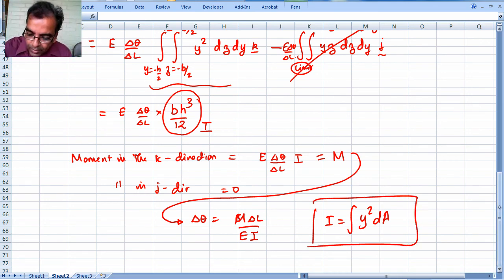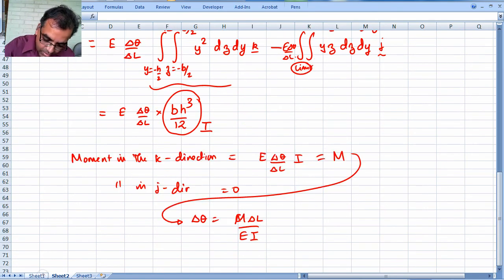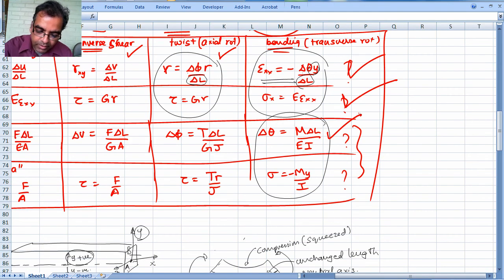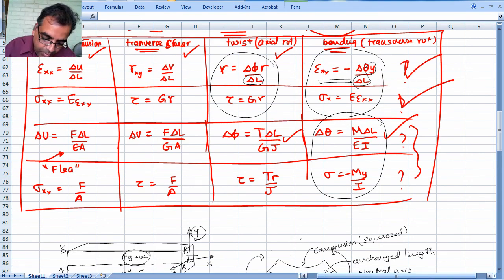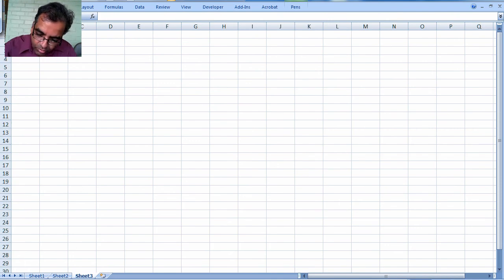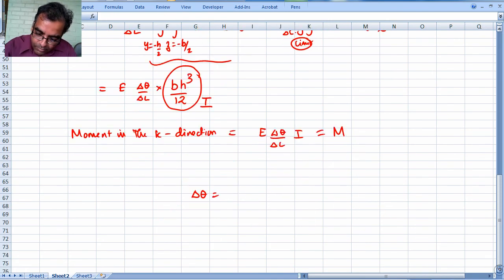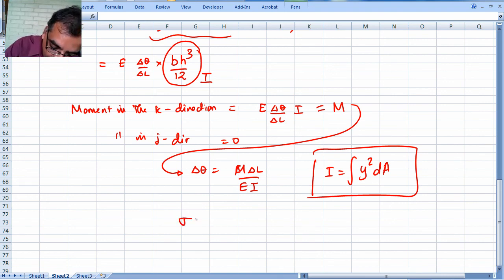Let's recap. We have now got this result - this is the counterpart to T delta l over GJ. Notice this flea-type setup works all the way across: delta u is FL over EA, delta v equal to FL over GA, delta phi equal to TL over GJ, delta theta equal to ML over EI. How much easier can you get? There is nothing to it. So there is only one last thing left, and that's the easy thing to show.